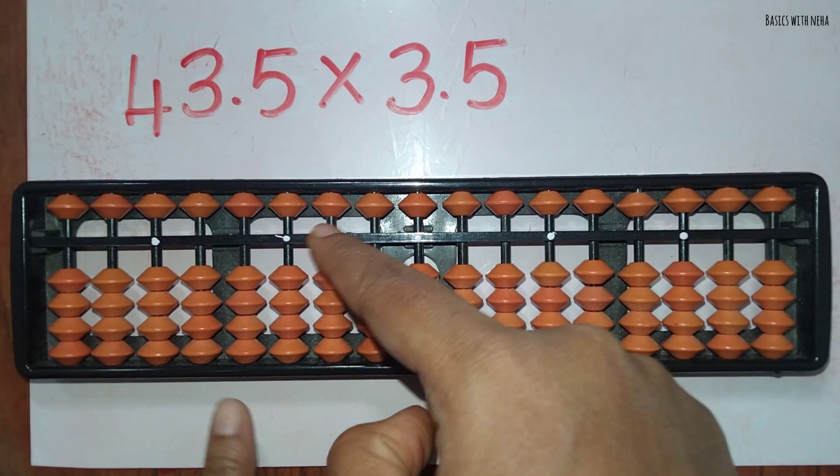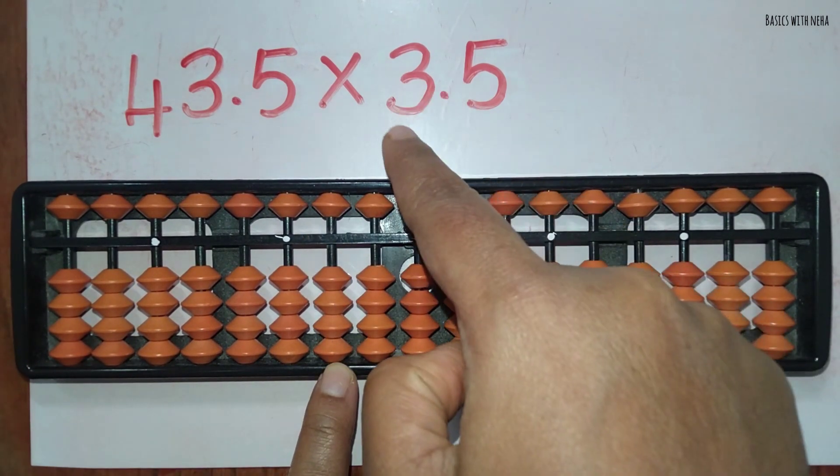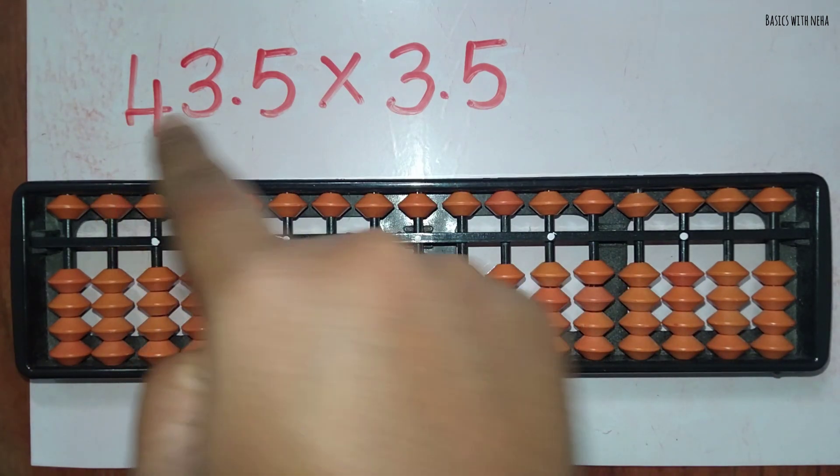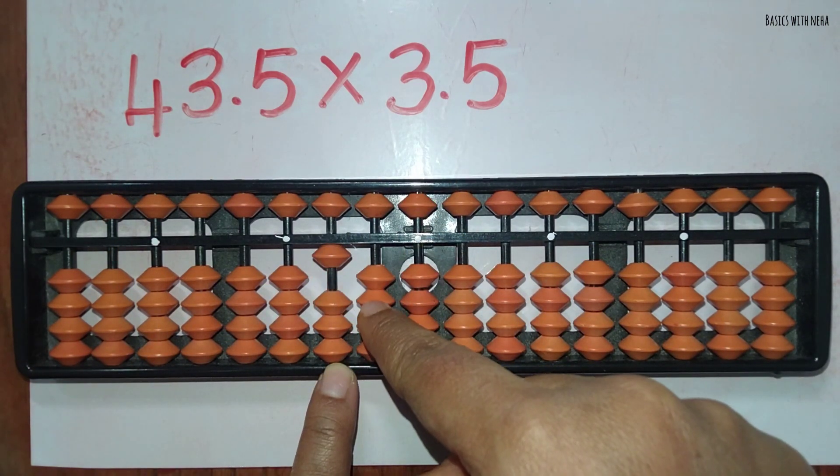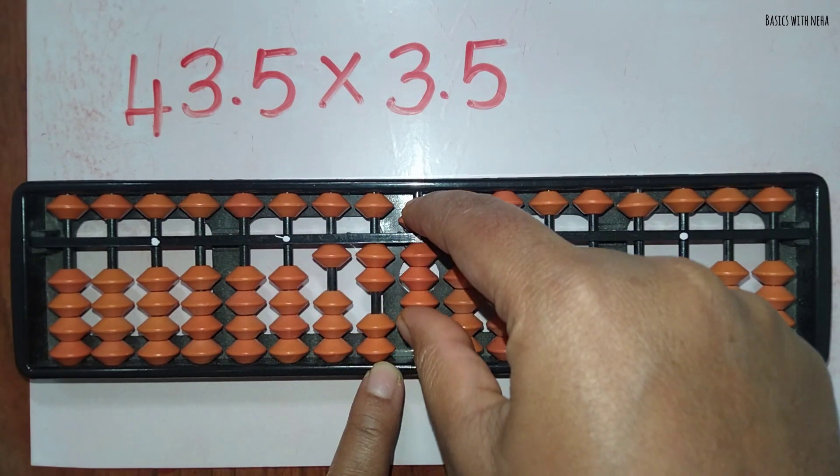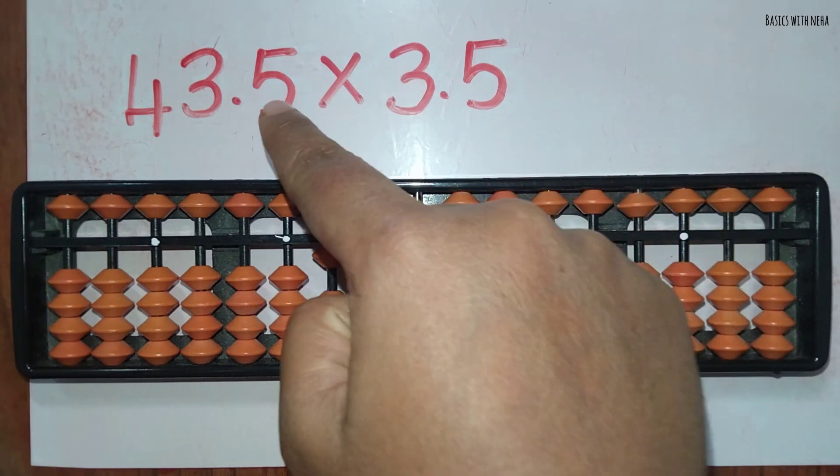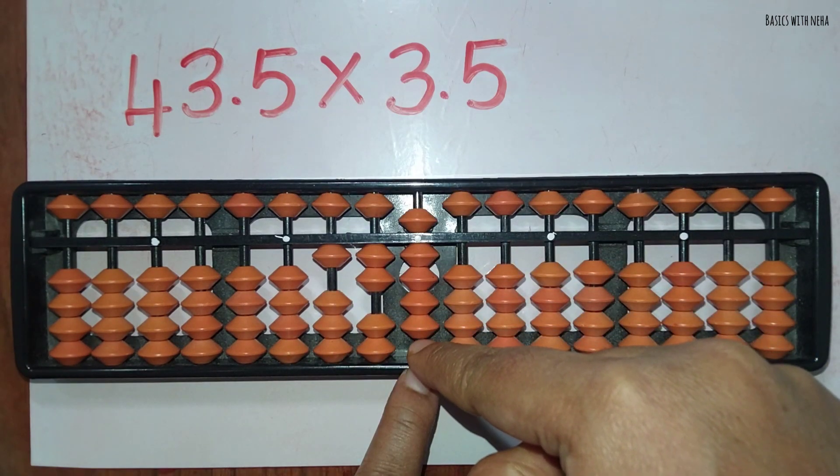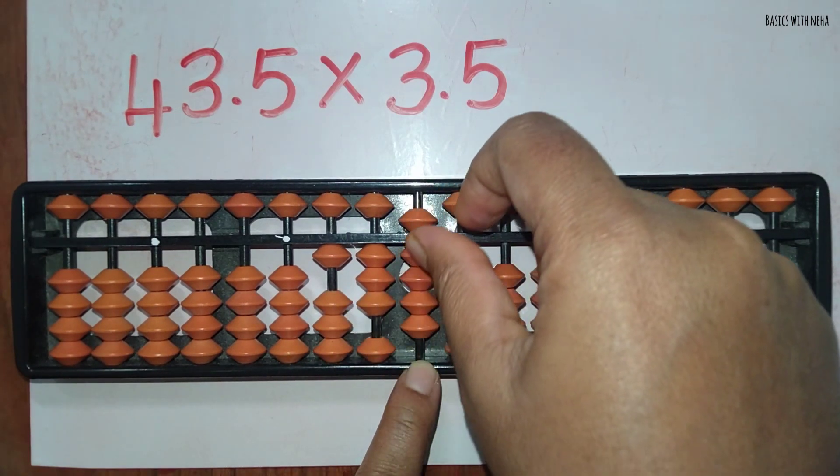So start from the third rod: 1, 2, 3. You should start from this rod. Three fours are 12: 1, 2, 12. Now three threes are 9: 0, 9. Now three fives are 15. One should be done here, plus 10, minus 9, and 5.